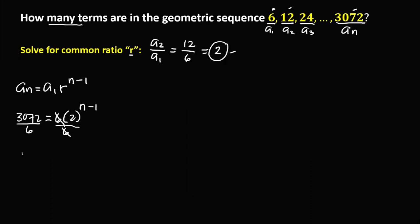3072 divided by 6 equals 512, so we have 512 = 2^(n-1).